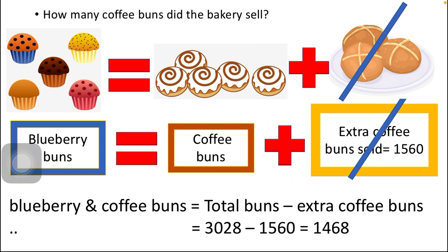The first step is to take out the extra coffee buns. In mathematics, 'take out' means subtraction. So: blueberry and coffee buns equals total buns minus extra coffee buns, which is 3028 minus 1560, giving us 1468.